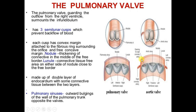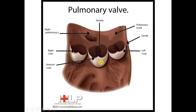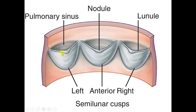The pulmonary valve has three semilunar cusps with nodule and lunule. The cusps are arranged as left cusp, right cusp, and anterior cusp. The pulmonary sinus — the outward bulging of the wall of the pulmonary trunk — is seen between and opposite each cusp. The mitral or bicuspid valve has two cusps: the posterior cusp is thicker than the anterior. The anterior cusp is also called the aortic septal or anteromedial cusp; the posterior is also called the ventricular, mural, or posterolateral cusp.